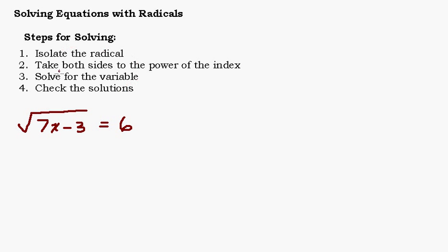Here are the steps for solving. First thing you want to do is isolate the radical, which means you want to get the square root on one side of the equal sign all by itself. We already have that in this first example. On the left-hand side of the equal sign, there's nothing else but the radical and everything under it. So we're good to go.